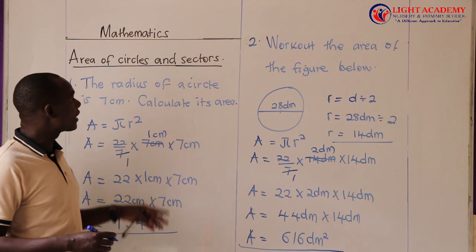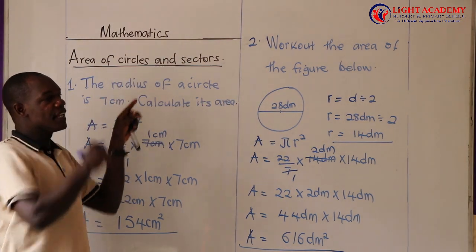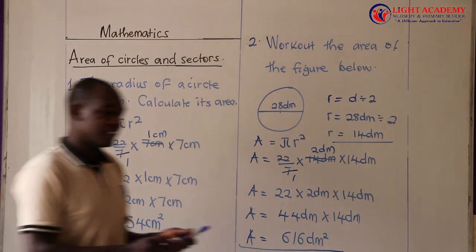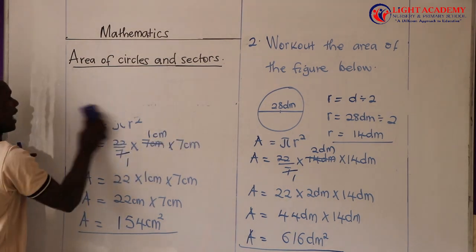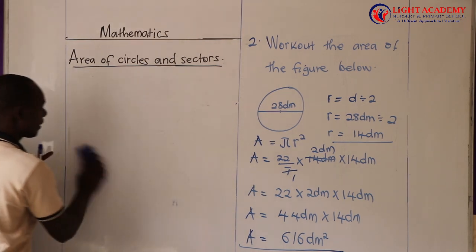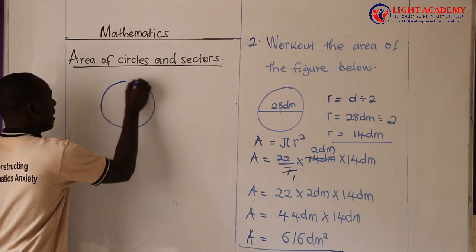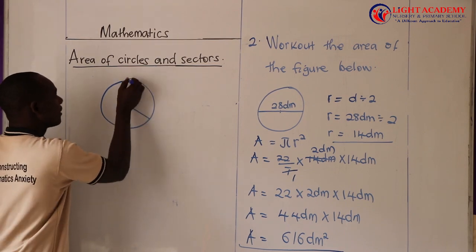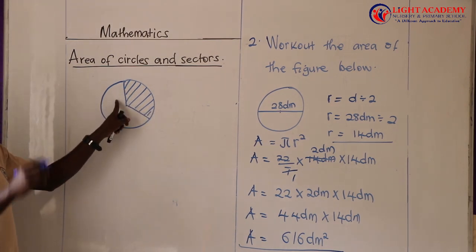So we shall also look at another example. Remember we are looking at area of circles and sectors. Examples 1 and 2 were looking at a full circle. Now in example 3 we are going to look at sectors. First of all, what is a sector? A sector is a part of a circle. When you extract only a part of a circle, you get a sector. If a full circle is like this, and I extract from the center outward, I get a sector — a straightened part of the circle.